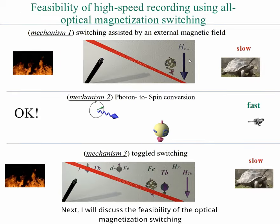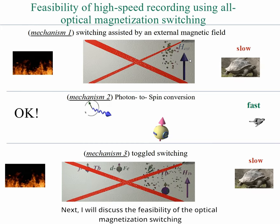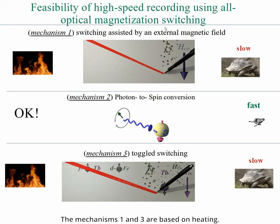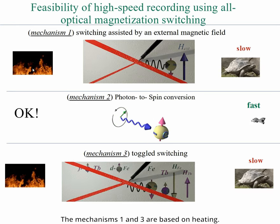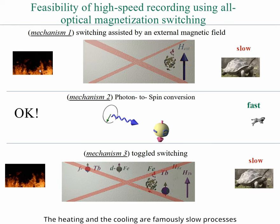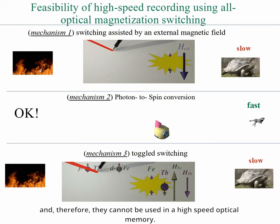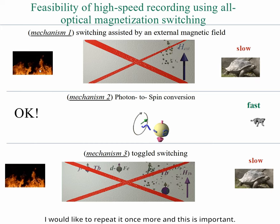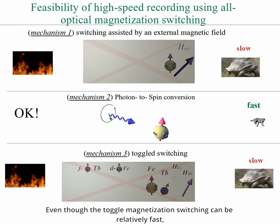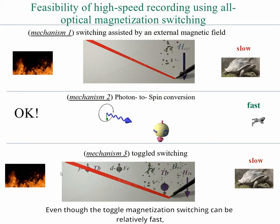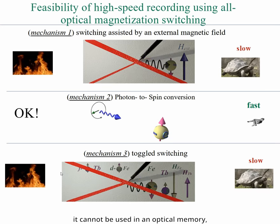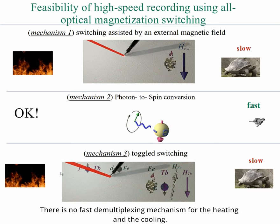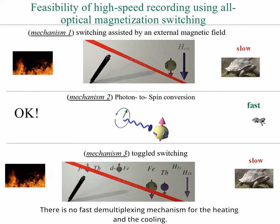Next, I will discuss the feasibility of optical magnetization switching as a recording mechanism in high-speed optical memory. Mechanisms 1 and 3 are based on heating. The heating and the cooling are famously slow processes, and therefore they cannot be used in high-speed optical memory. Even so, the toggle magnetization switching can be relatively fast — it cannot be used in optical memory because its switching mechanism is based on heating. There is no fast demultiplexing mechanism for heating and cooling.